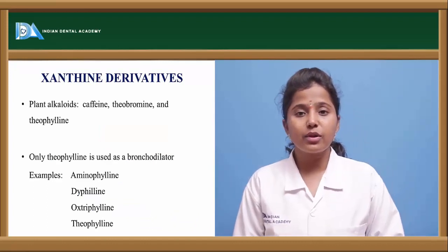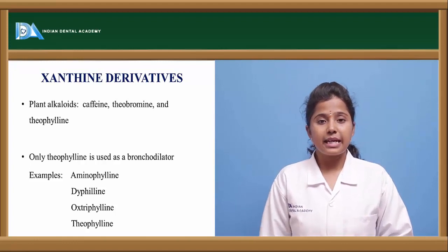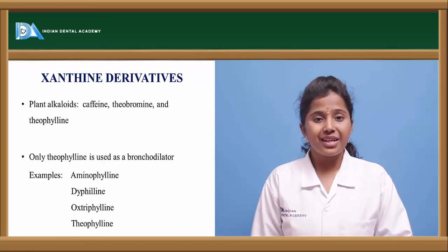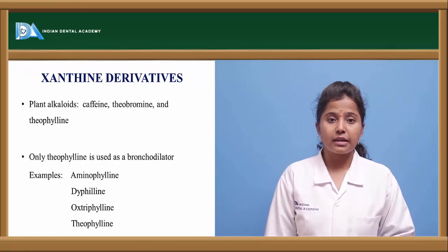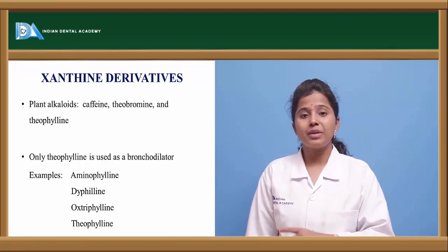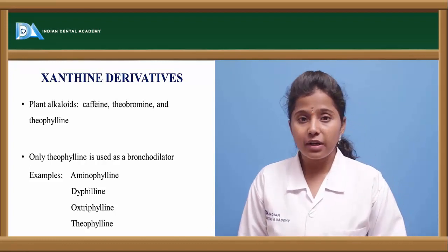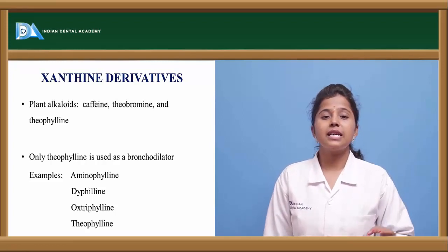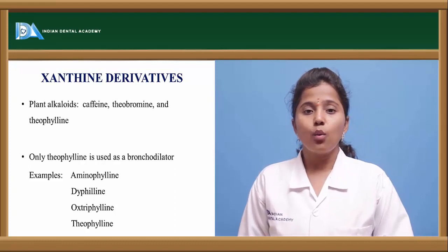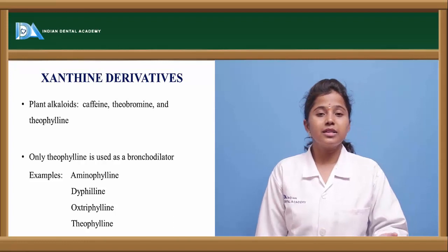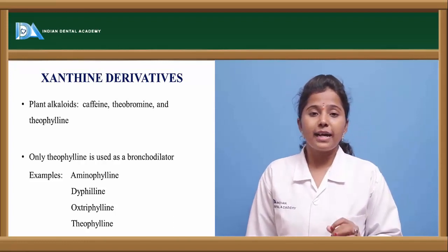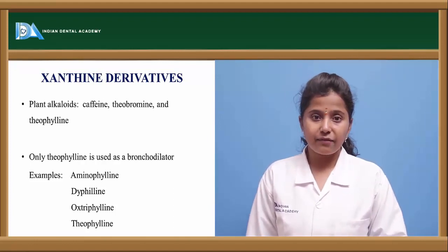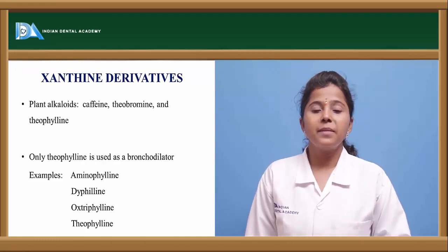The first class of drugs are xanthine derivatives or methylxanthins. These are basically plant alkaloids like caffeine, theophyllin, and theobromine. Of these, theophyllin is mainly used as a bronchodilator. Other methylxanthin bronchodilators include aminophyllin, dyphyllin, oxyphyllin, and theophyllin. These are the major xanthine derivatives used as bronchodilators. They are called methylxanthins because they contain methyl groups at C1 and C5 — the first and fifth carbon atoms in their structure.